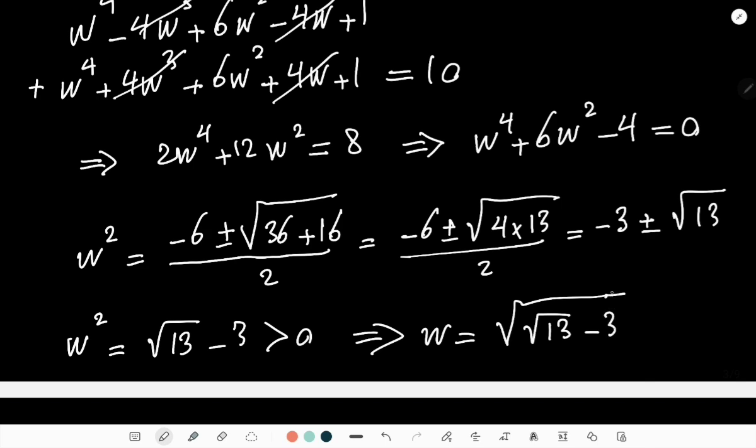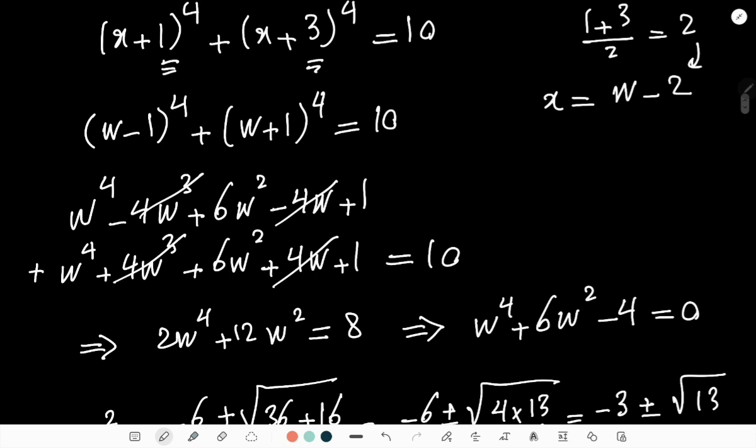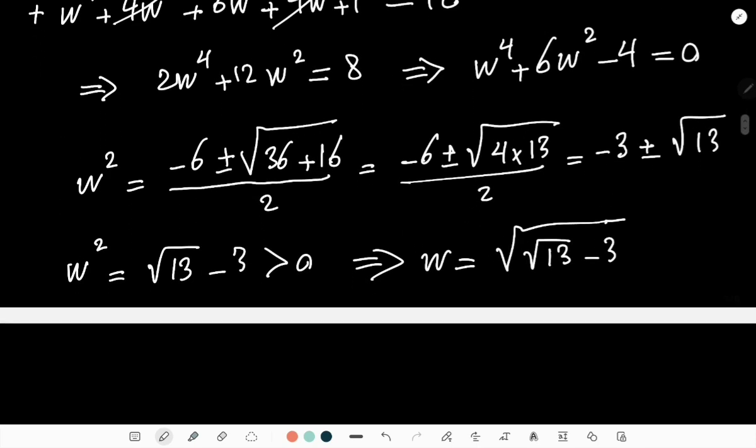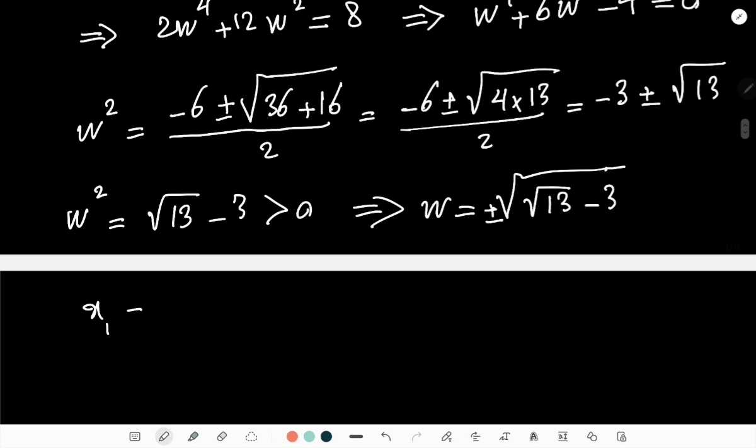Okay, and what was w? w was x + 2, right? Or you could say x = w - 2, which means... By the way, here when I do the square root then I have also plus-minus, and that means x₁ will be √(√13 - 3) - 2, and then the second x would be x₂ = -√(√13 - 3) - 2. So these are two real roots, and there are also two complex roots, and I'll give that exercise to you guys.